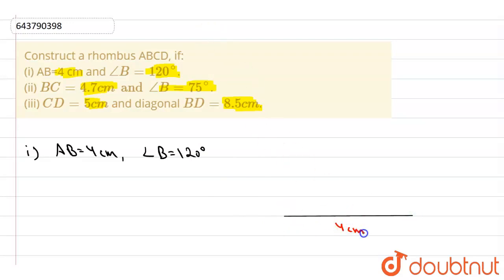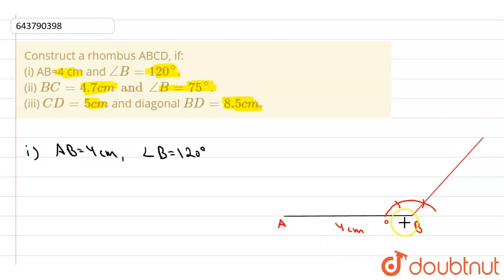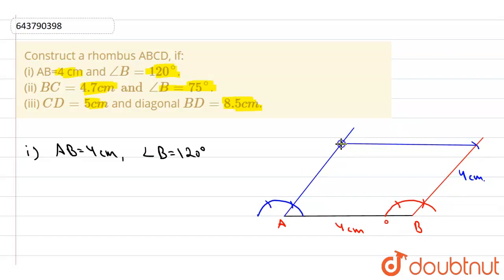Draw line AB of 4cm — this is point A and this is point B. At point B, cut an arc of any measure, then from that arc cut another arc: this gives 60°, and this gives 120°. Join point B to the point of intersection. From B, cut an arc of 4cm along this ray. Similarly, from A, cut an arc of 4cm. Where they intersect gives point D. Join all sides — each side is 4cm. Angle B is 120°. The first rhombus ABCD is constructed.